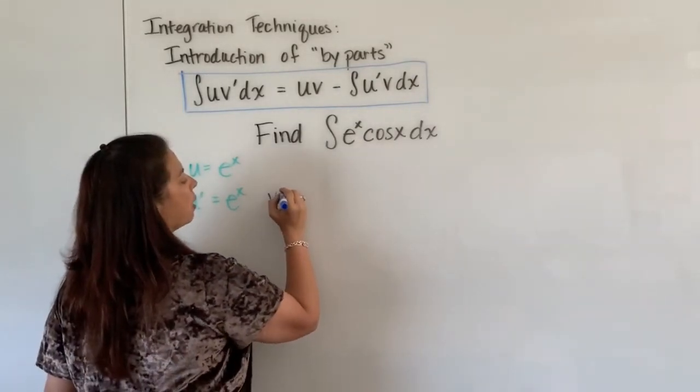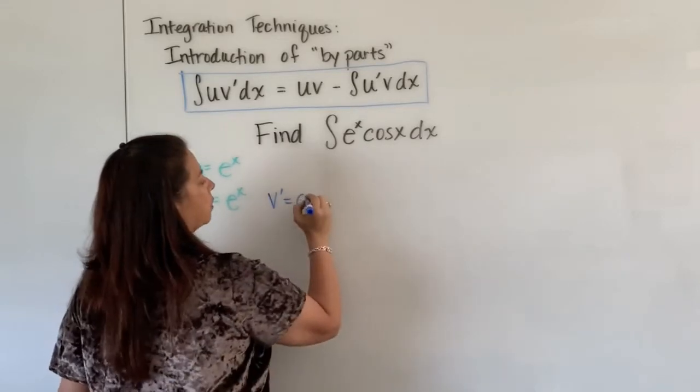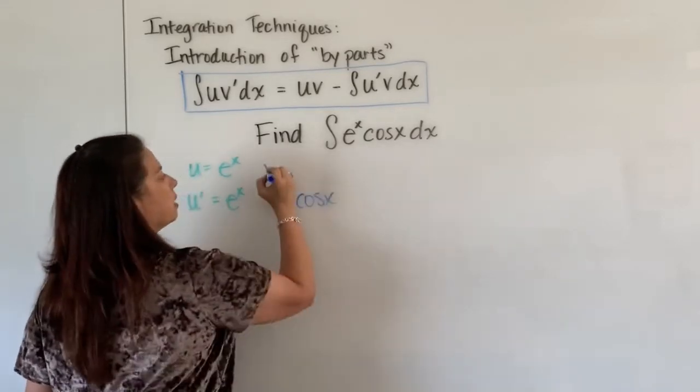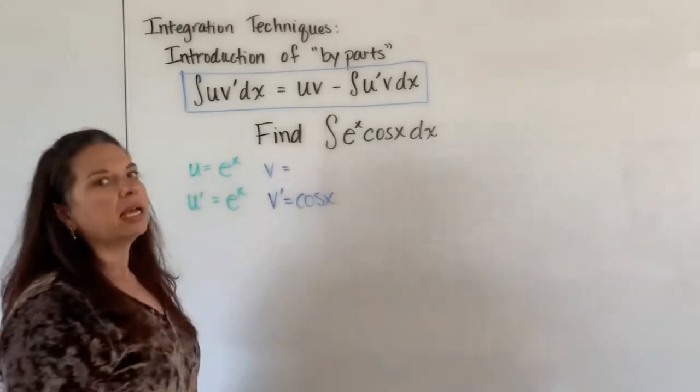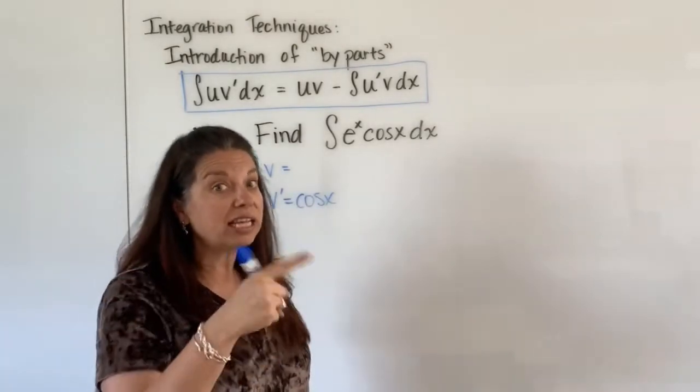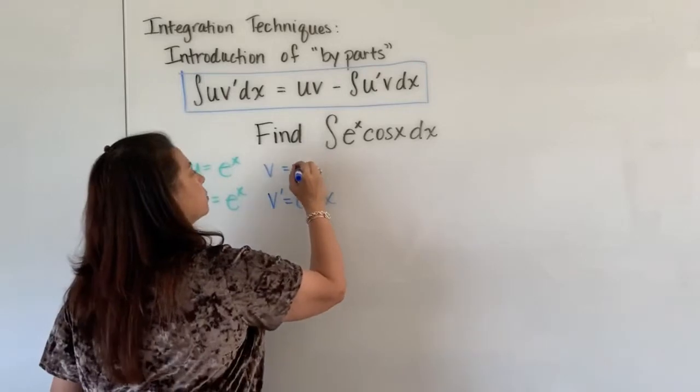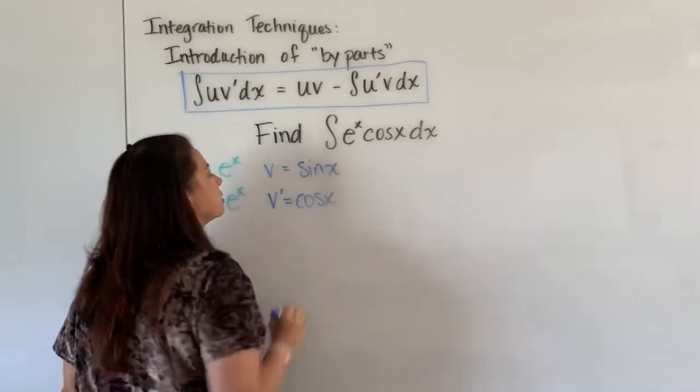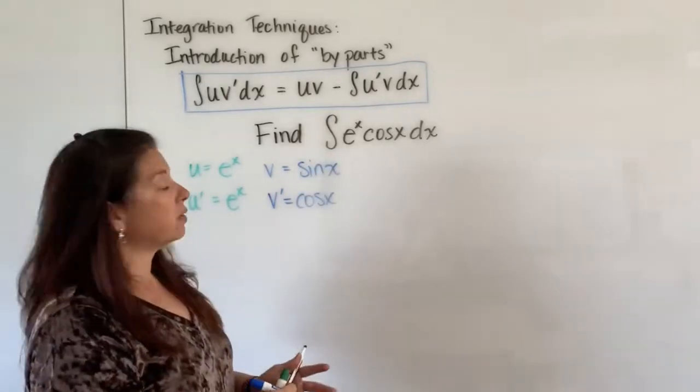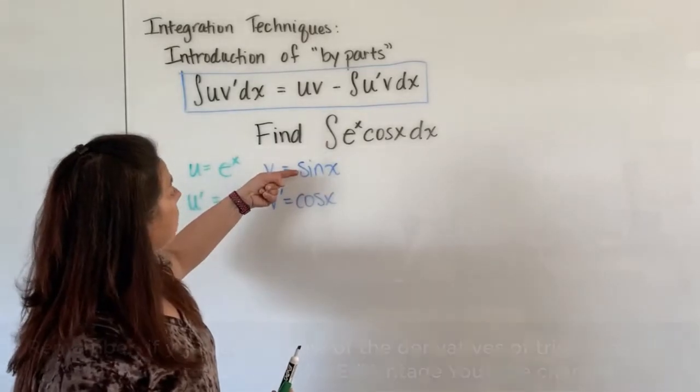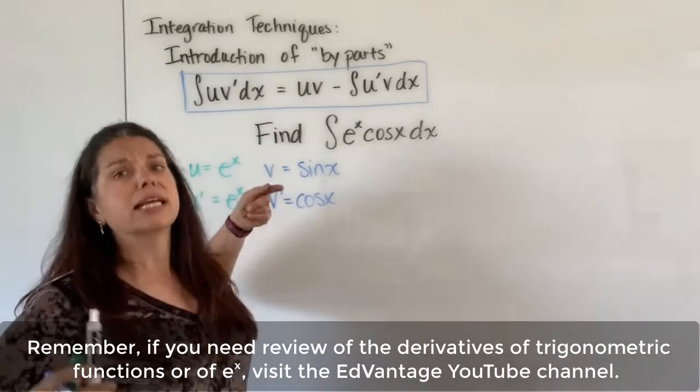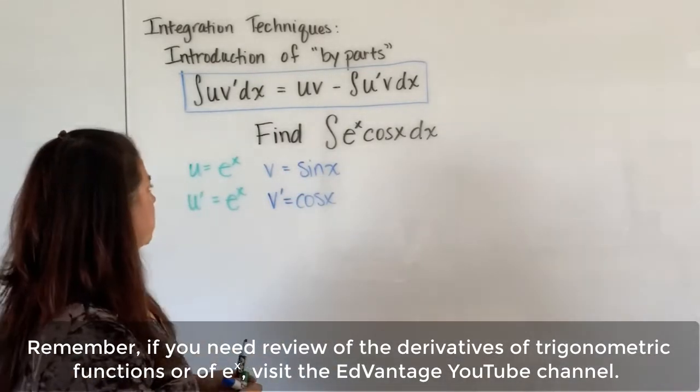We also have our v prime, which is our cosine x, but now we need to figure out what the anti-derivative of, the integral of that cosine x. Well, we know that comes from a sine x, which check ourselves and say, is the derivative of sine x really cosine x? Yes, it is. So we're all good with our signs.